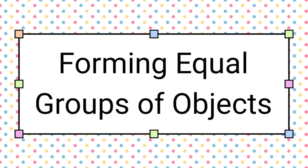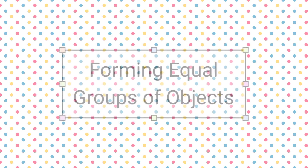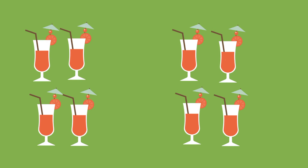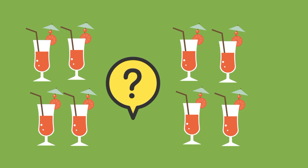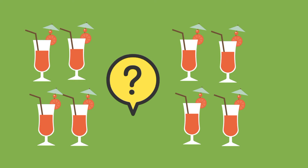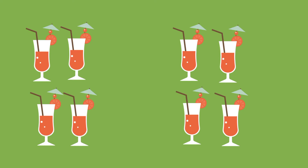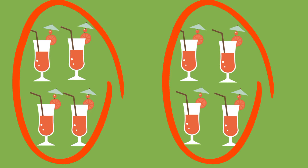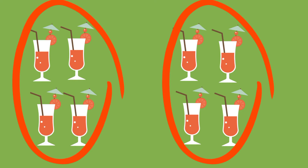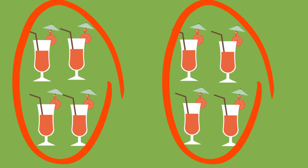Forming Equal Groups of Objects. Look at the glasses of juice. Can you tell how many glasses of juice there are in all? There are two groups. Each group has four glasses of juice. Two groups of four glasses is equal to eight glasses of juice.